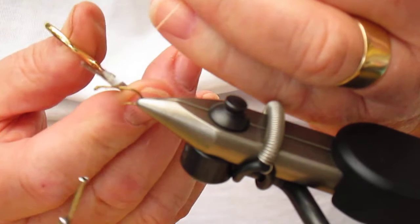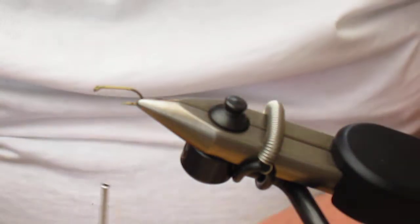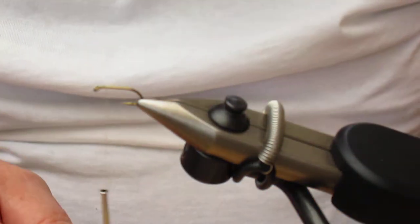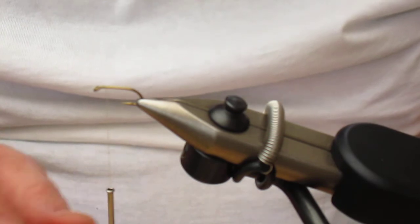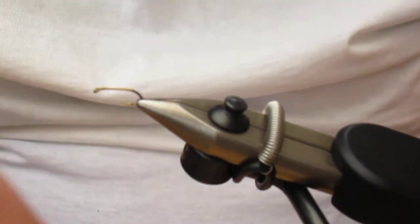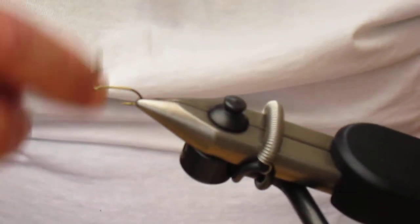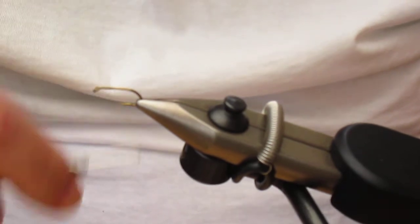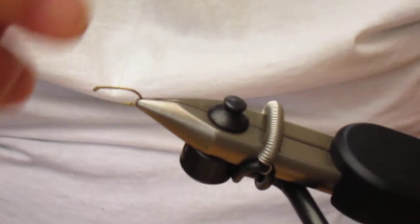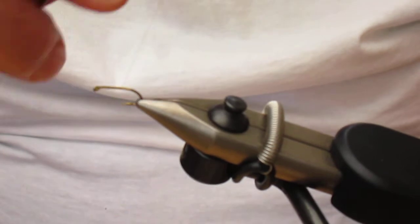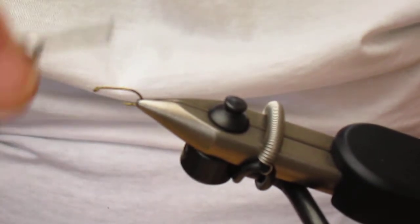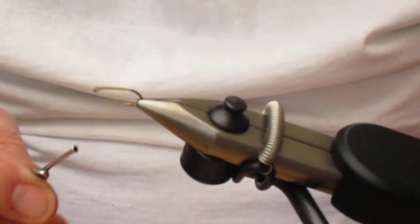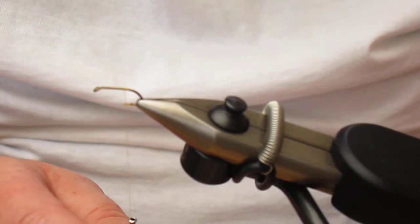Trim the waste and we're going to take the thread down to a position which is midway between the point and the barb of the hook. We don't want to take it too far down because you end up with the tail sloping slightly downwards, which is not what we're looking for.